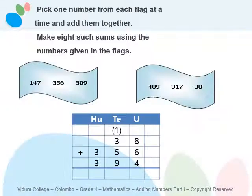Let's go to our next activity. In this slide you can see two flags. There are some numbers in these flags — you have to pick one number from each flag at a time and add them together. You can make eight such sums. The numbers in the first flag are: one hundred and forty-seven, three hundred and fifty-six, and five hundred and nine. The second flag has: four hundred and nine, three hundred and seventeen, and thirty-eight.